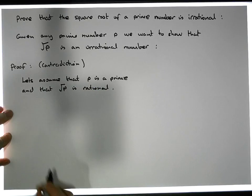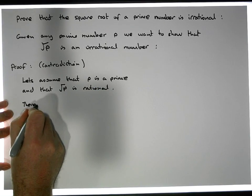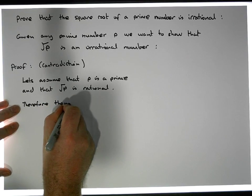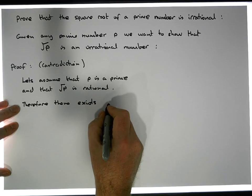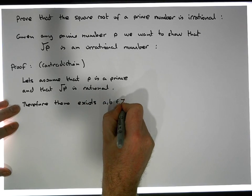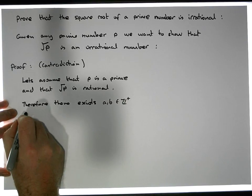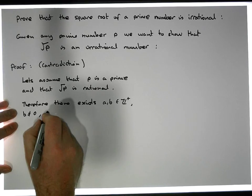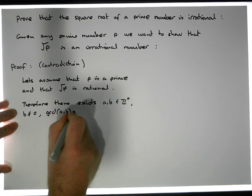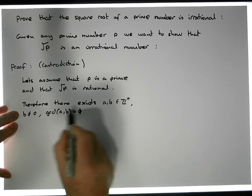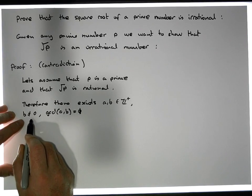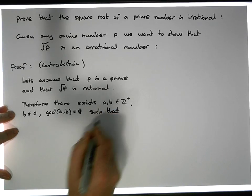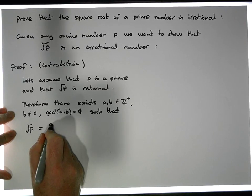So what does that mean? Well, if the square root of P is rational, then we can write it as a fraction. So therefore, there exist A and B, elements of the integers — we'll make them positive — where B is not equal to zero, and also A and B have no common factors, so the GCD of A and B is equal to one. Such that the square root of P can be written as A divided by B.